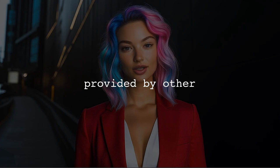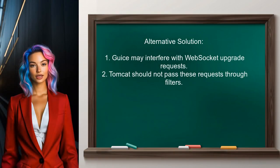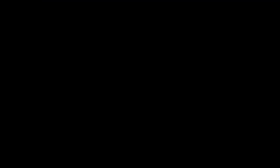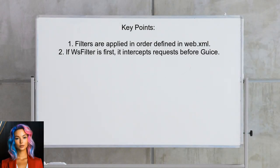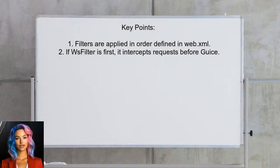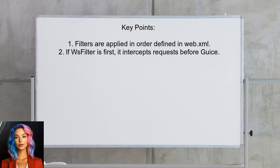Now, let's look at answers provided by other users. An alternative solution suggests that the issue may stem from how Geist handles WebSocket upgrade requests. Normally, Tomcat should not pass these requests through filters, but it seems Geist is interfering with this process. Filters are applied in the order they are defined in the web.xml file. If the WebSocket filter is defined first, it will intercept the request before Geist can process it. If the Geist filter is first, it can break WebSocket functionality.